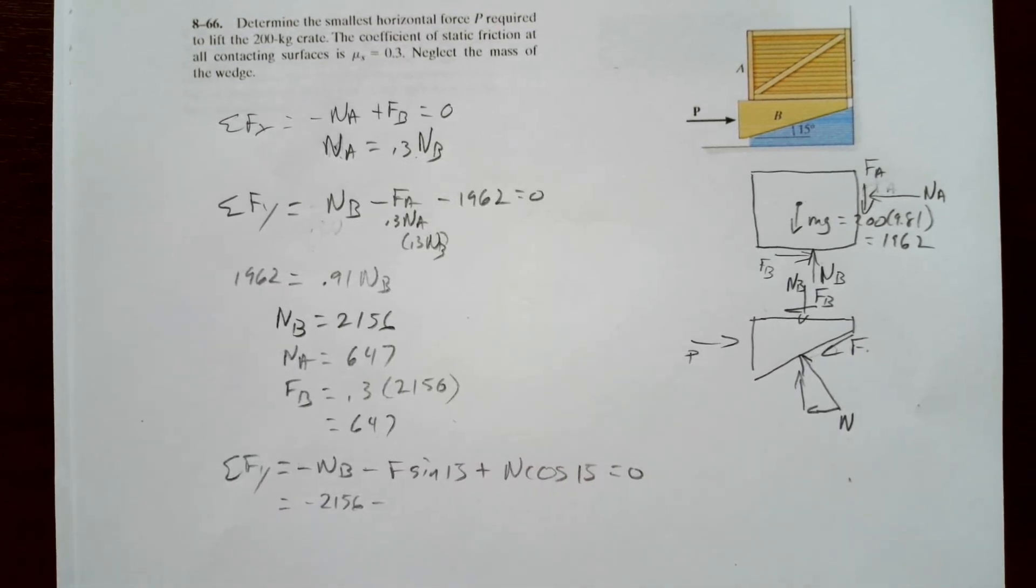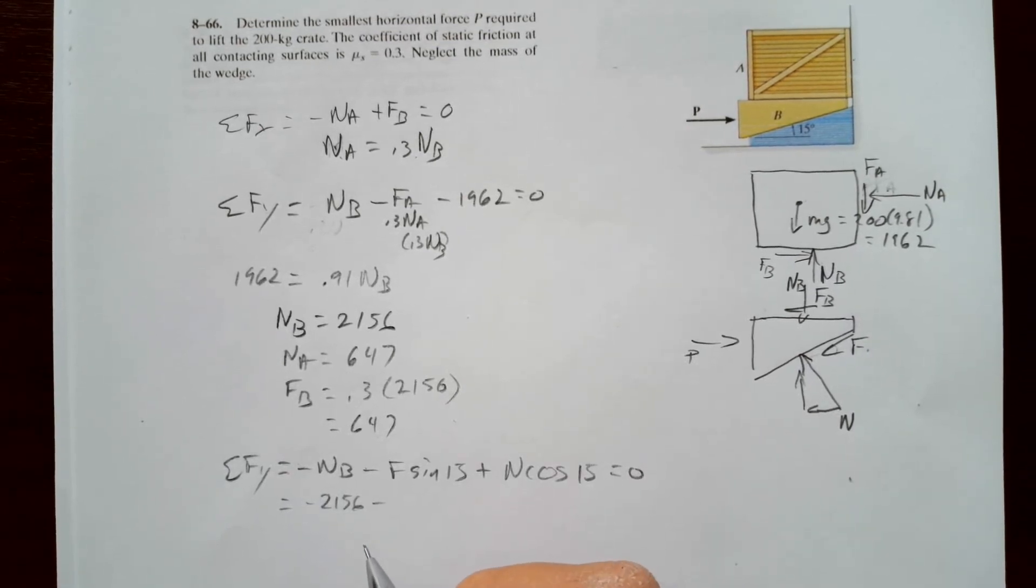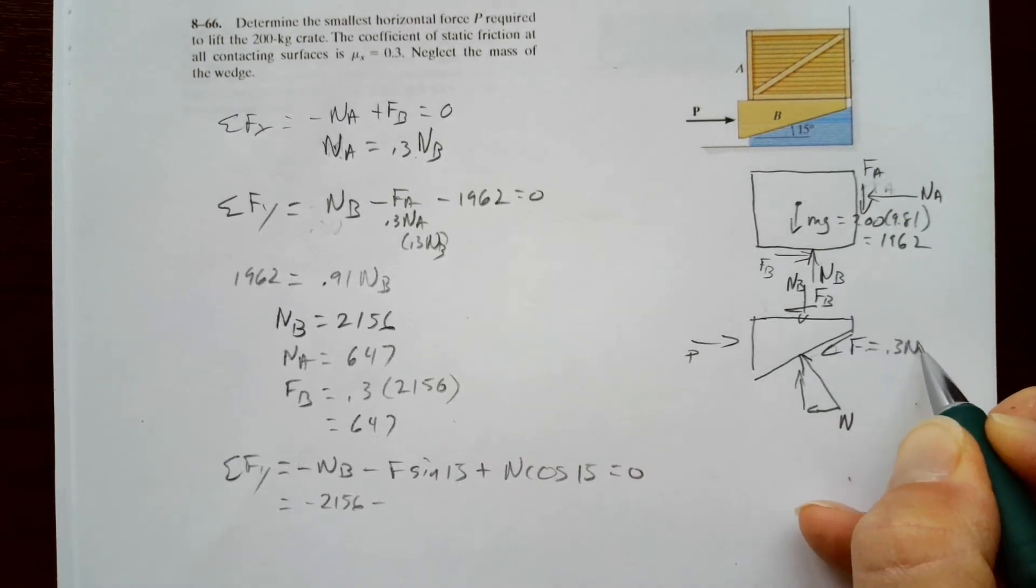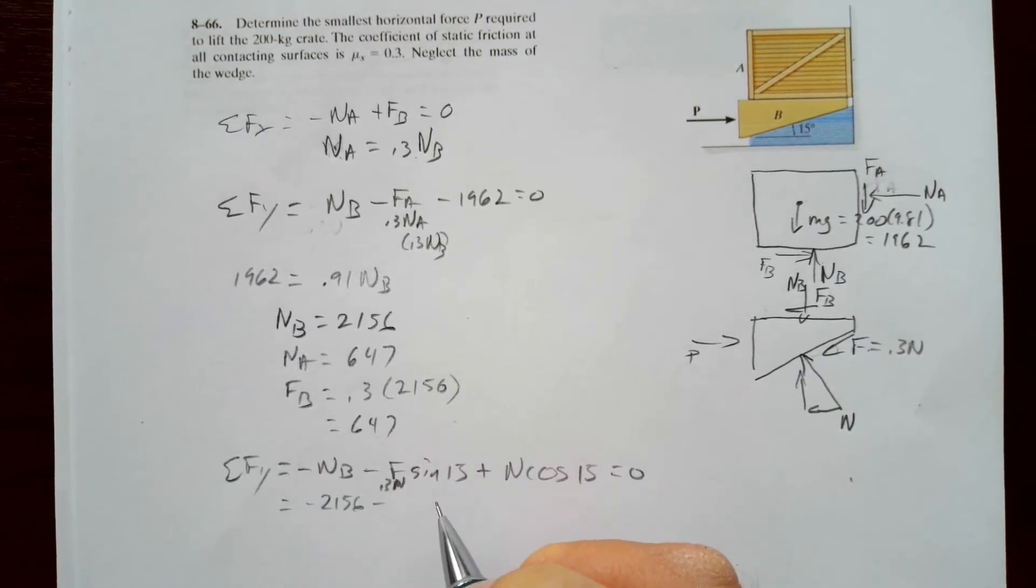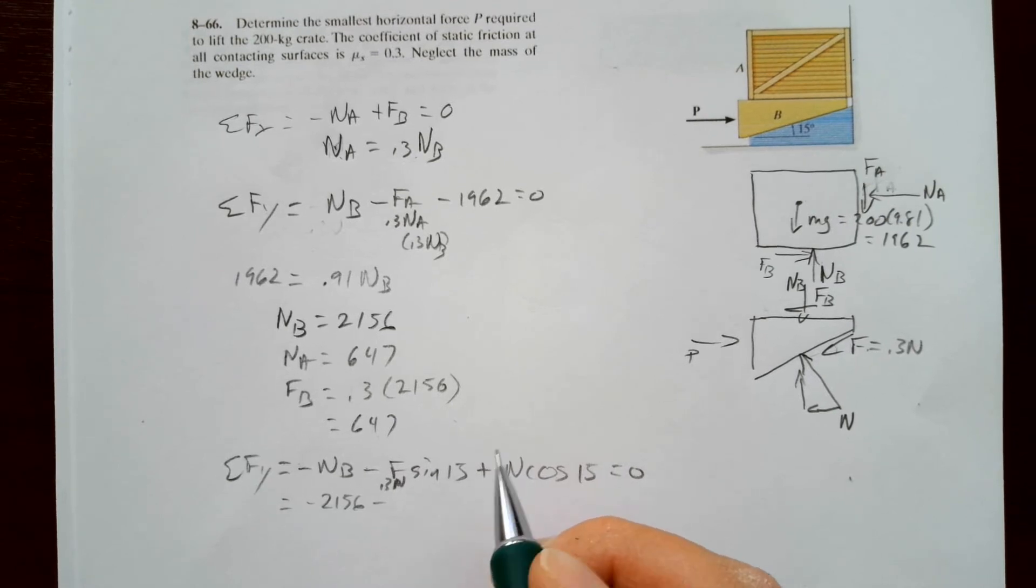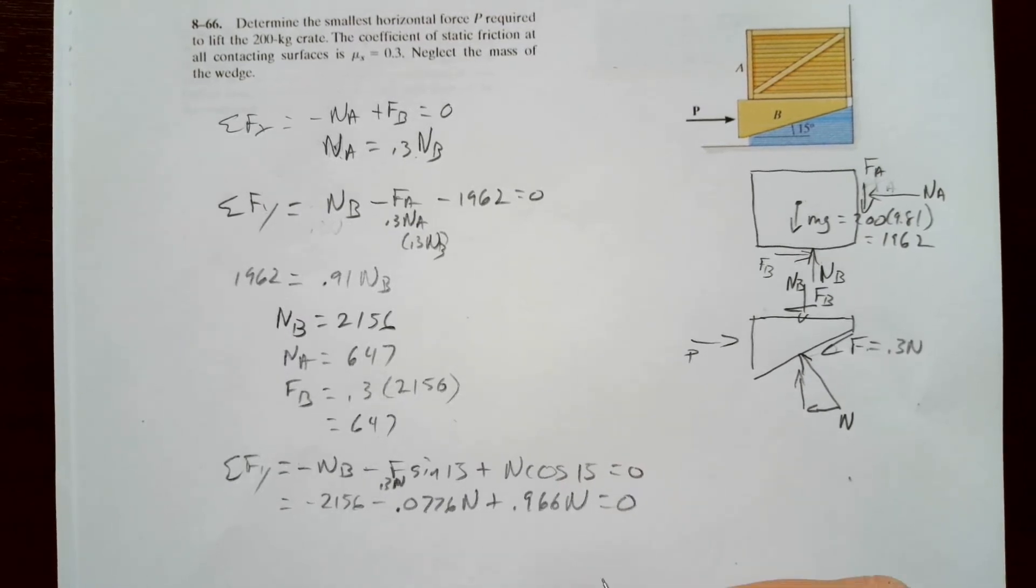And we know that F is slipping. So F here is equal to 0.3 N. So 0.3 times the sine of 15 is 0.0776 N. Plus the cosine of 15, 0.966 N equals 0. Combine the N's. Move it to the other side. And N is equal to 2427.